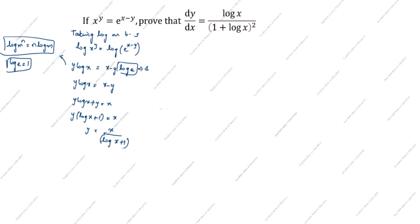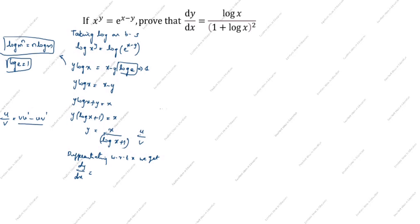Next we will differentiate with respect to x to get dy/dx. This is in the form u by v, so we apply the quotient rule: u by v equals (v u dash minus u v dash) divided by v squared.